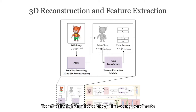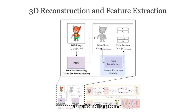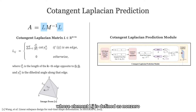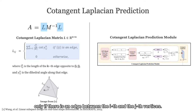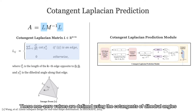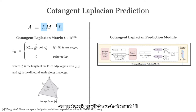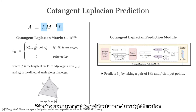To effectively learn those properties corresponding to the underlying 3D shape of an image, we first apply image-based 3D reconstruction to obtain a 3D point cloud, and extract its features using a point transformer. Taking them as input, we learn the cotangent Laplacian of the 3D reconstruction. The cotangent Laplacian is a highly sparse and symmetric matrix, whose element L_ij is defined as non-zero only if there is an edge between the i-th and j-th vertices. These non-zero values are defined using the cotangents of dihedral angles and edge lengths with respect to edge ij. Our network predicts each element L_ij by taking pairs of the i-th and j-th input points, and uses a symmetric architecture and a weight function to guarantee the predicted cotangent Laplacian to be symmetric and sparse.